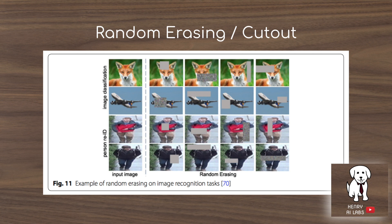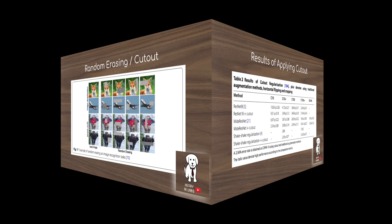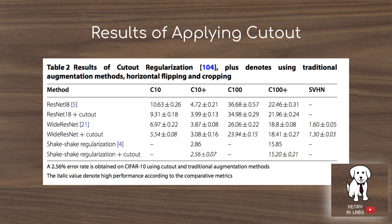Another very interesting technique is random erasing, or cutout, which is used frequently in state-of-the-art image recognition models. It's like dropout but in the input space — a rectangle is placed on the image and replaced with all zeros, all ones, or static noise. The results from the cutout regularization paper show greater than a 1% error rate reduction in almost all trials.